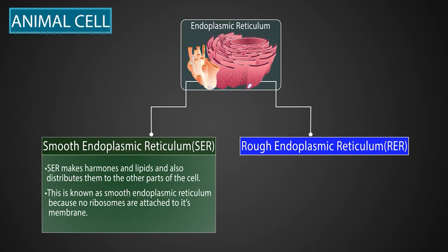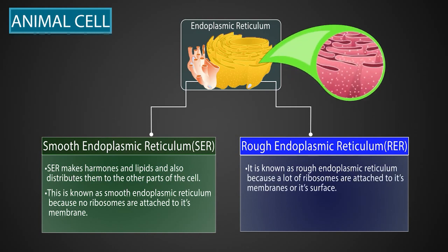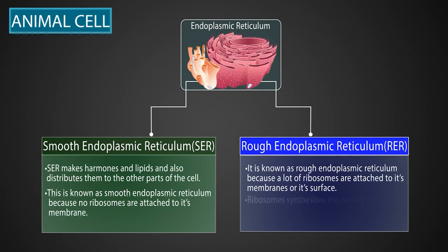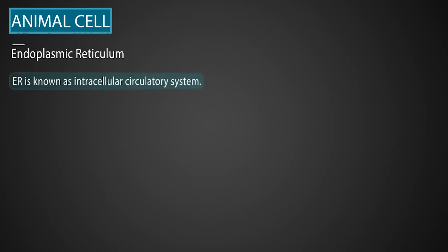Next is the rough endoplasmic reticulum. It is known as rough because a lot of ribosomes are attached to its membrane or its surface. Ribosomes synthesize the protein on the surface or cytoplasm of the rough endoplasmic reticulum. The endoplasmic reticulum is also known as the intracellular circulatory system.